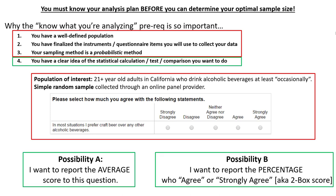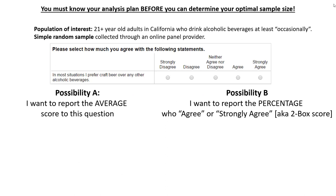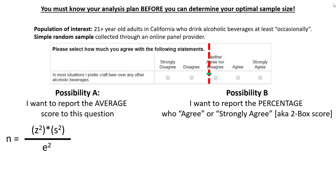These two different possibilities guide us towards entirely different statistical evaluations. Each one will result in approaching the optimal sample size formula calculation entirely differently. If I want to report the average score, I have to use the proper optimal sample size formula, and then determine an appropriate margin of error, confidence interval, and variance in the population.